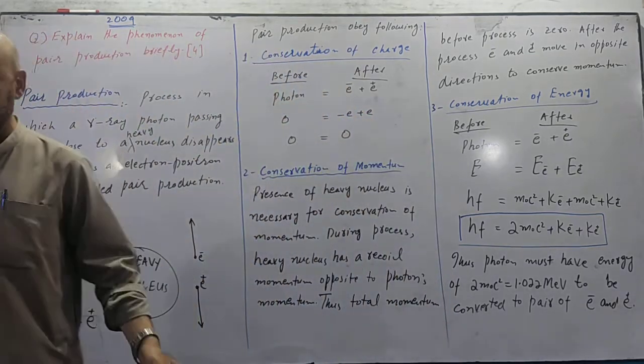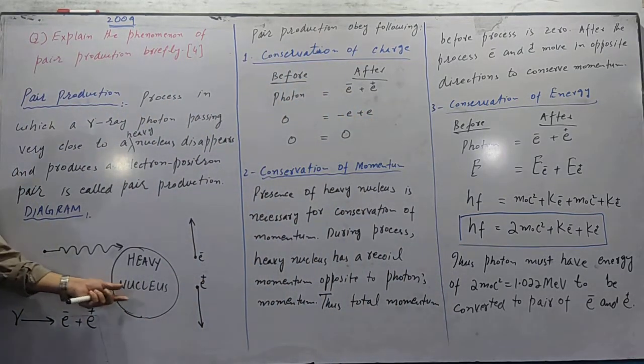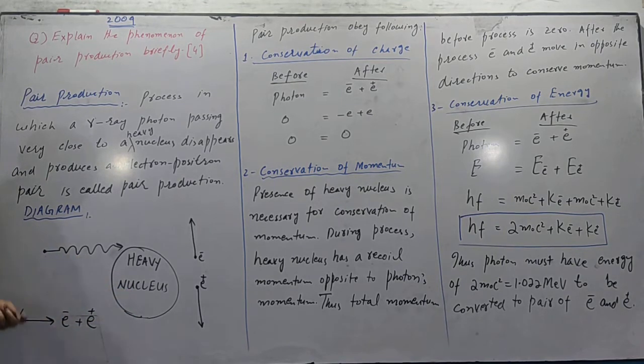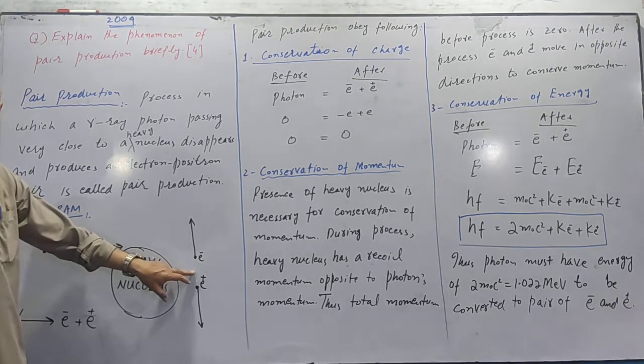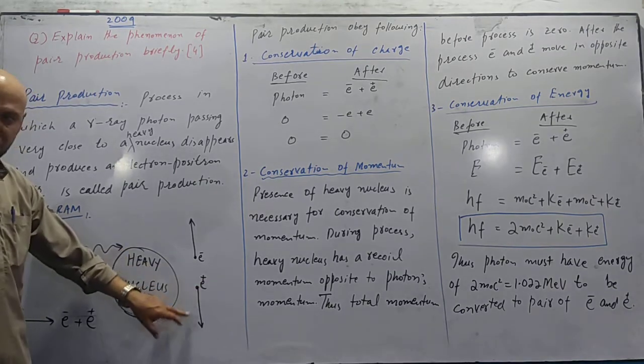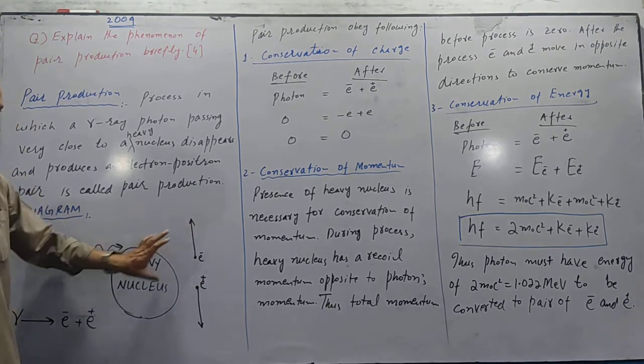Here is the diagram. Heavy nucleus and near it a gamma ray photon passes. The photon disappears. And in the end, electron with minus sign and positron with plus sign - this pair is produced. This is the summary equation.